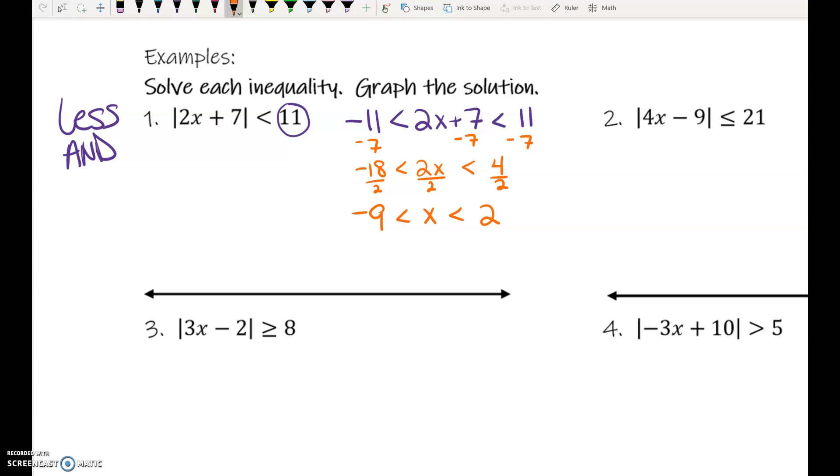Really, I'm upset that there's not more space between the graph and the number 3. So, I'm going to graph this right over here. Negative 9, 2. Open circle, open circle. Shade in the middle.